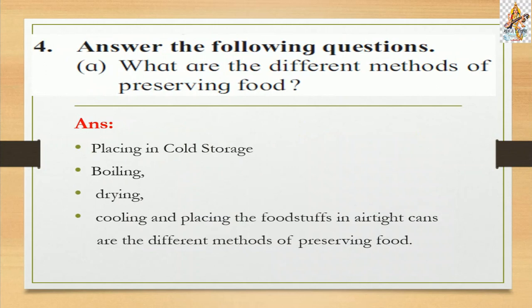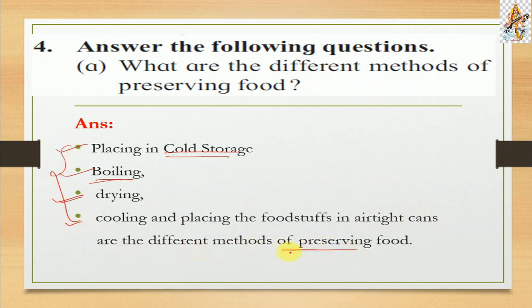Question number four, Answer the following questions. Part a: What are the different methods of preserving food? The answer is: placing in cold storage or a fridge, boiling, drying in summer or in the sun, and cooling and placing foodstuffs in airtight cans are the different methods of preserving food.